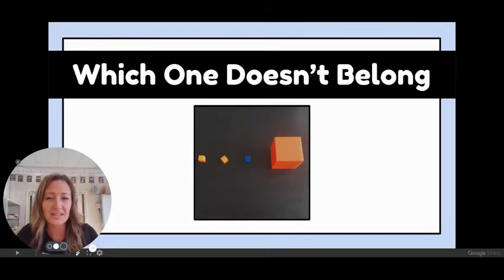So I'm going to walk you through an example first. If you look at this picture on our screen, you can see that there are four objects in this picture. So when I'm looking at this, I have to decide which one doesn't fit in this picture.